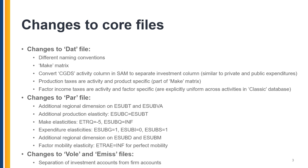Changes to the PAR file: we've added a regional dimension to the key production elasticities E sub T and E sub VA. Because we've modified the production nesting, we needed an additional elasticity called E sub C, which represents the substitution across intermediate demand. We've set this equal to E sub T, which was the previous top-level elasticity.